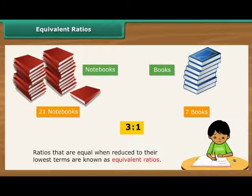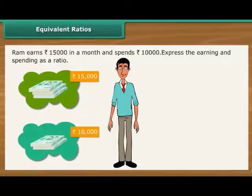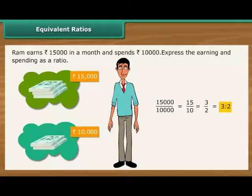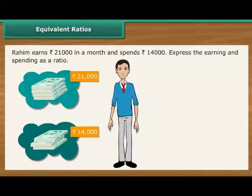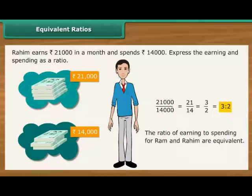Let us verify whether the following ratios are equivalent. Ram earns Rs. 15,000 in a month and spends Rs. 10,000. 15,000 by 10,000 is 15 by 10, which when reduced to the lowest term is equal to 3 is to 2. It means that out of every Rs. 3 earned, Ram spends 2. Rahim earns Rs. 21,000 in a month and spends Rs. 14,000. 21,000 by 14,000 is 21 by 14, which when reduced to lowest term is equal to 3 is to 2. It means that out of every Rs. 3 earned, Rahim also spends 2. The ratio of earning to spending for Ram and Rahim are equivalent.